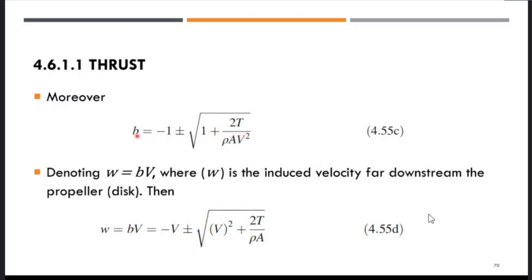The slipstream factor b can also be expressed similarly (equation 4.55c). Denoting the small letter w as the induced velocity far downstream equal to b·v, the induced velocity far downstream of the disc becomes expression 4.55d.